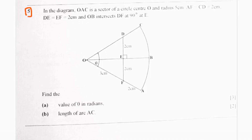The question has two parts: Part A and Part B. Part A carries 3 marks and Part B carries 2 marks. Part A asks us to find the value of theta in radians, and Part B asks for the length of arc AC.